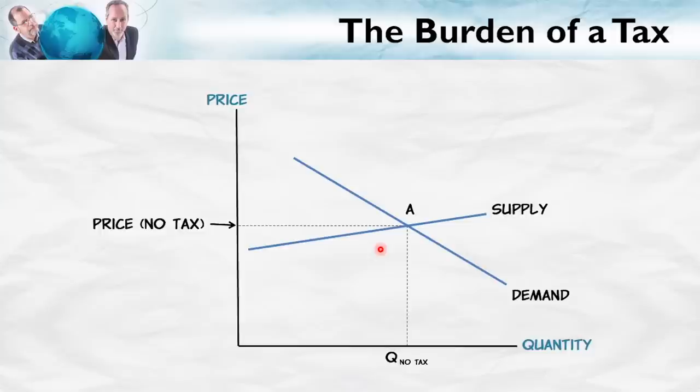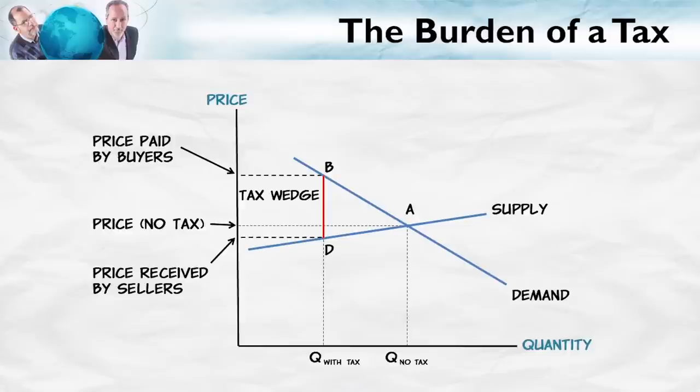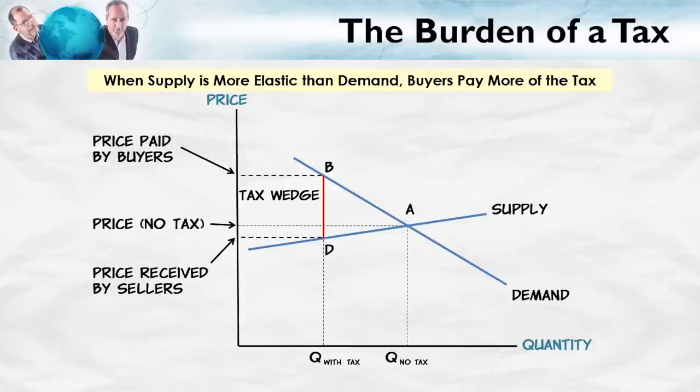Let's look at another case. In this case, we've drawn a supply curve which is very inelastic, and a demand curve which is less elastic than the supply curve. Once again, we're going to take our tax wedge, push it into the diagram, and read it off. Now we see that compared to when there was no tax, the price to the buyers has gone up a lot, and the price to the sellers has gone down by just a little bit. When the supply is more elastic than demand, buyers pay the greater share of the tax — the price to the buyers goes up more than the price to the sellers goes down.